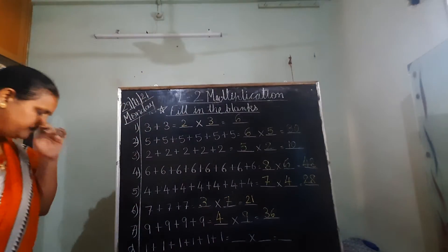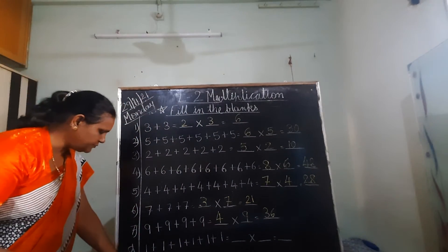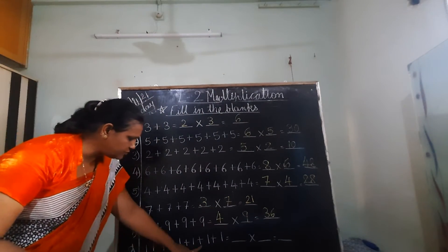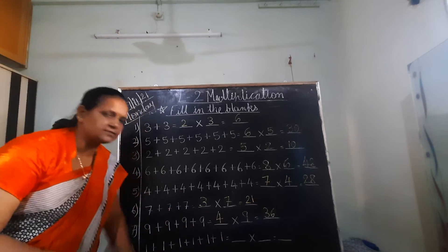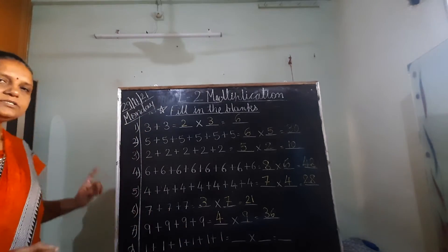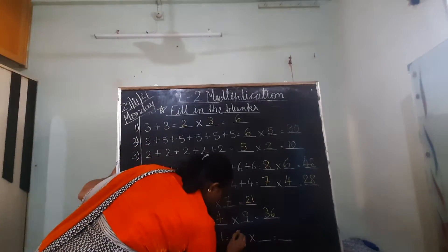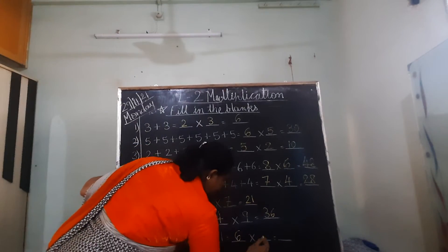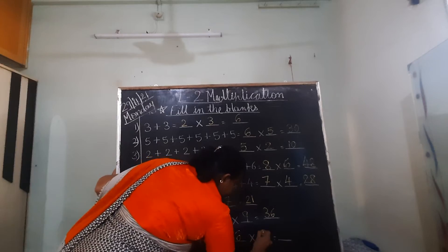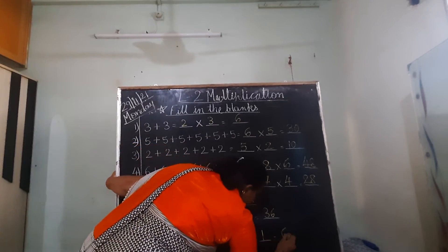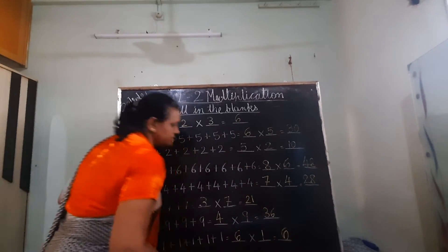1 is repeated for 1, 2, 3, 4, 5, 6 times. 1 is repeated 6 times. So write down 6 and 1. 6 1's are 6.